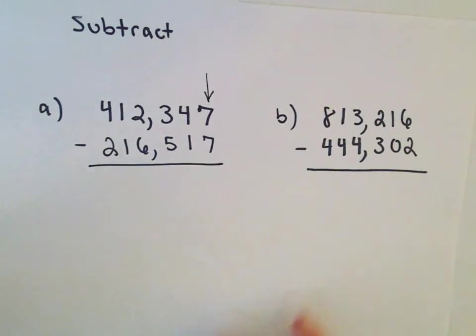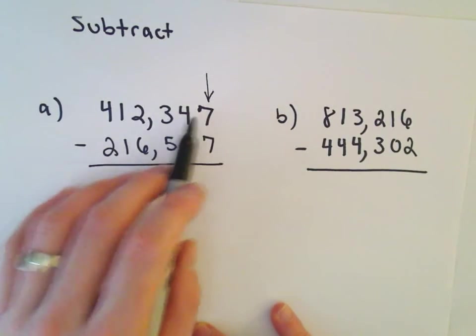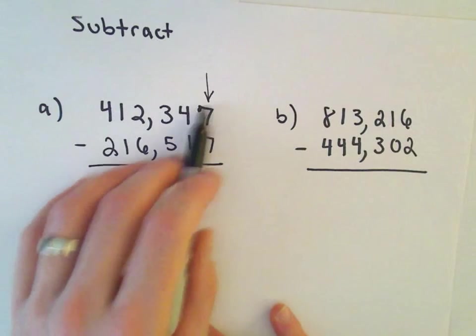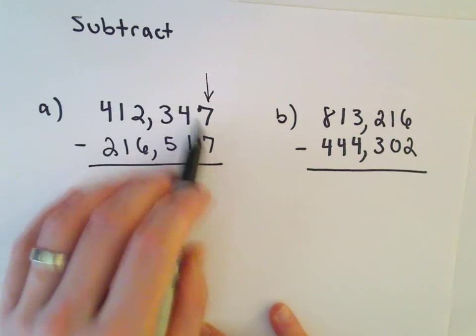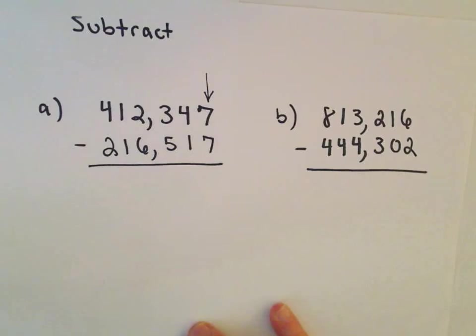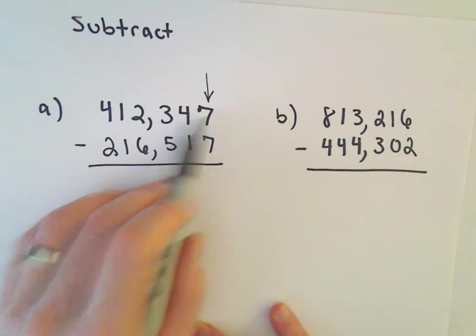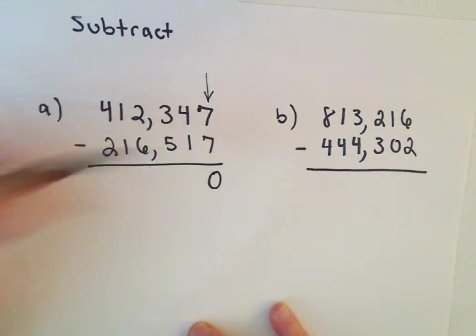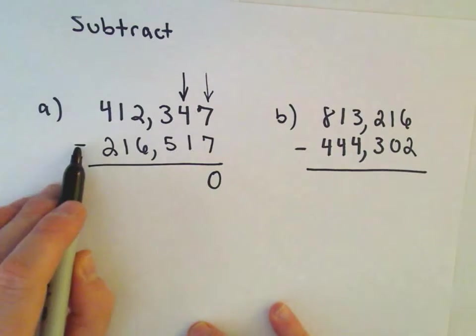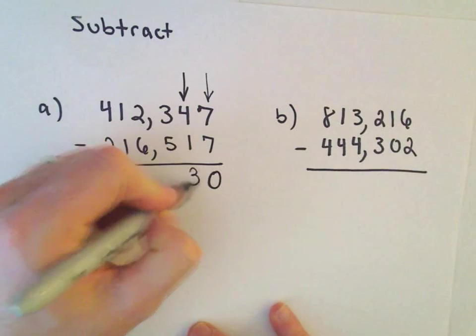So my first column, there's no problem. I don't have to borrow a digit from the next column. As long as the number on top is greater than or equal to the number on the bottom, we can just do our subtraction. So 7 minus 7 is going to leave us with 0. If I look at my next column, 4 minus 1 is going to leave us with 3.